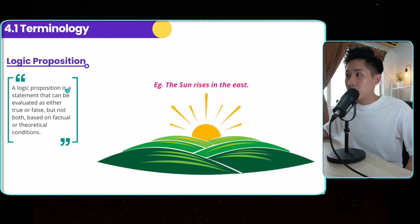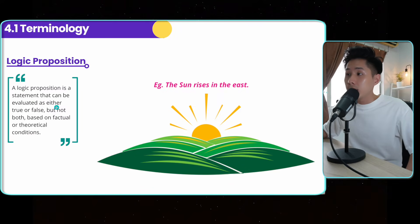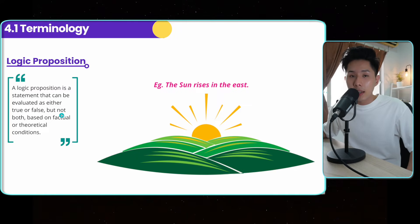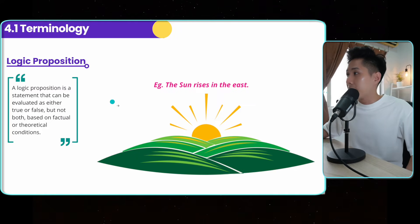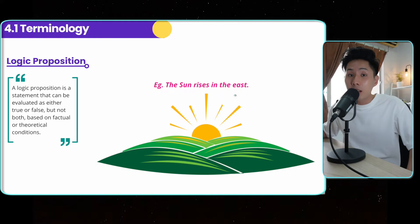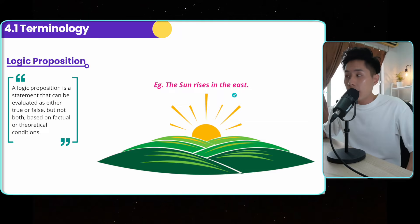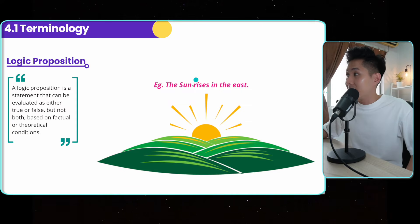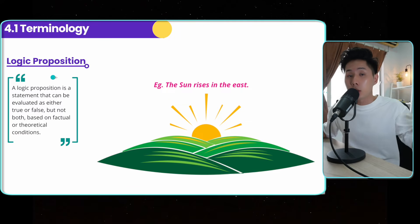A logic proposition is a statement that can be evaluated as either true or false, but not both. For example, 'the sun rises in the east' is a statement that can only be true or false, but not both. This is why this statement is what we call a logic proposition.